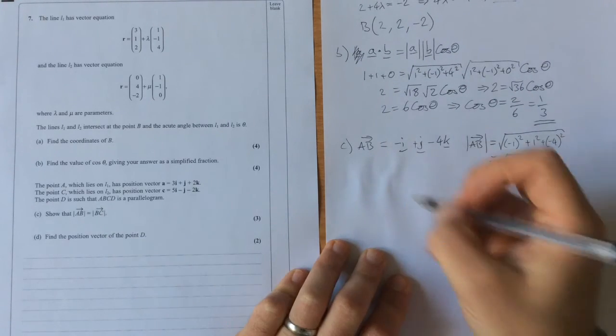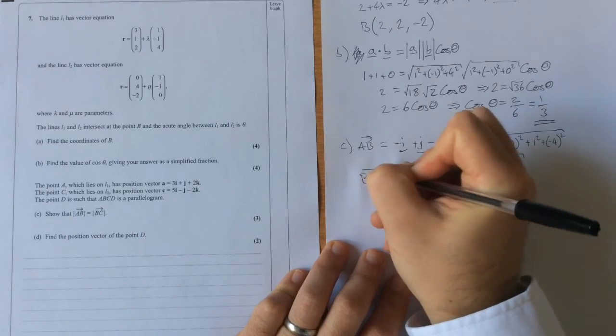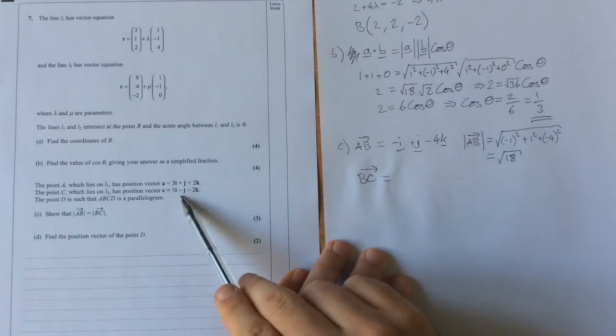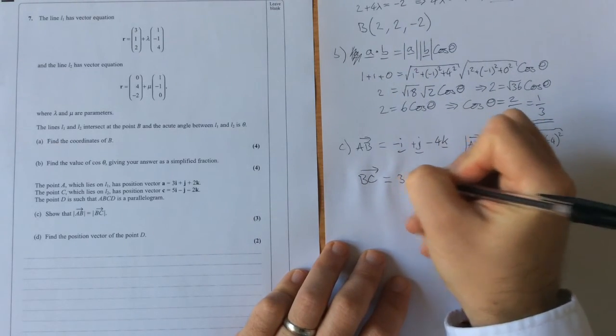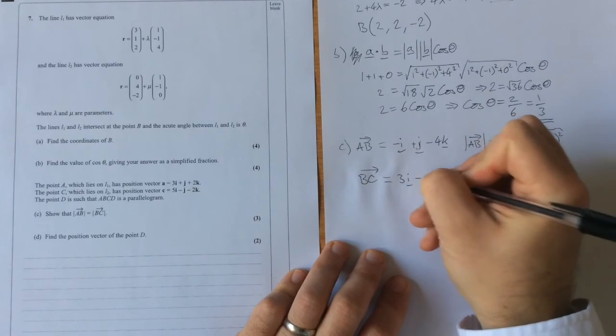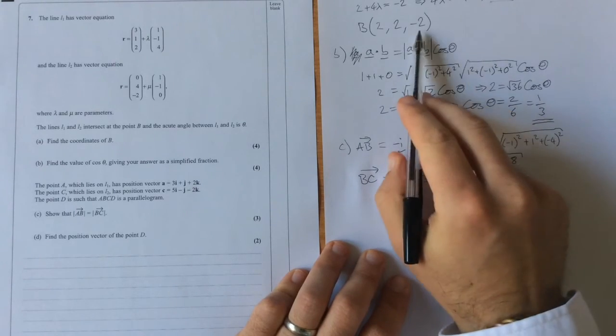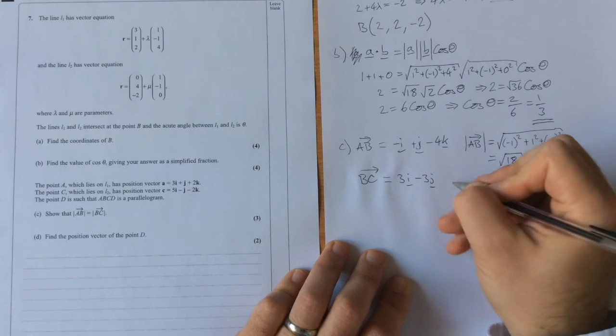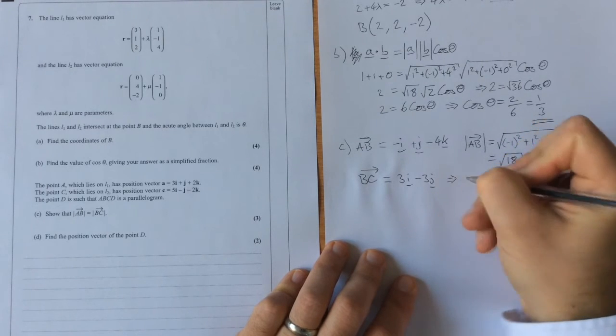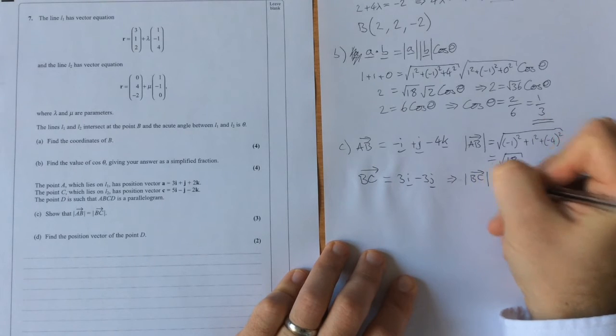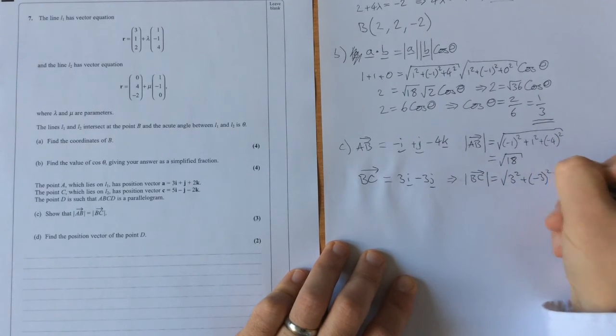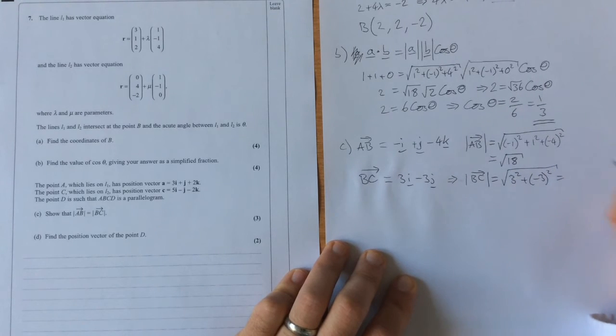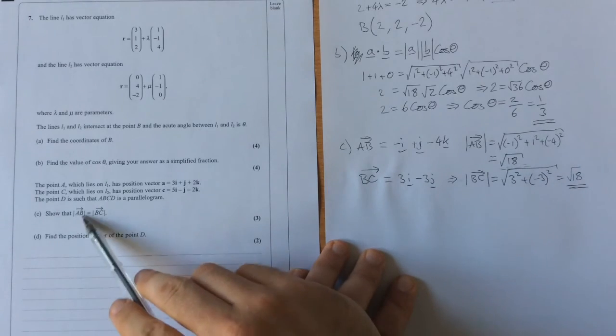For bc, this is going from b to c, so we're going from 2 to 5, so this is 3i, 2 to minus 1, minus 3j, and from minus 2 to minus 2, no k. So this gives us that the modulus of bc is the square root of 3 squared plus the square root of minus 3 squared, which is root 18. These two are the same. We've shown that that's true.